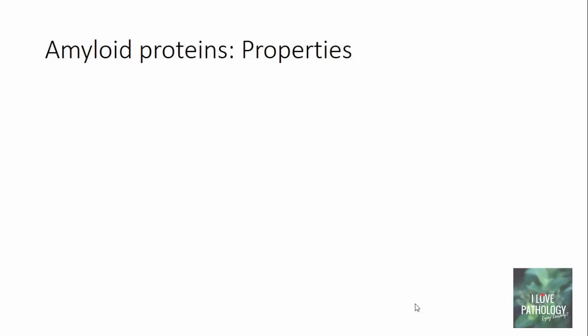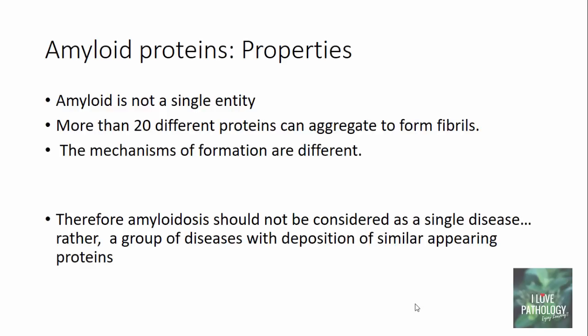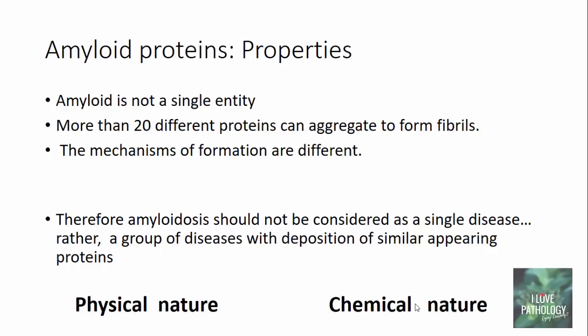Moving on to the properties of amyloid proteins: what we need to understand is that amyloid is not a single entity. There are more than 20 different proteins which can aggregate to form fibrils, and the mechanism of formation of each of these proteins is different. Therefore amyloid disease should not be considered as a single disease — rather it's a group of diseases with deposition of similar appearing proteins. Physically they all look similar, but compositionally they can be different proteins.